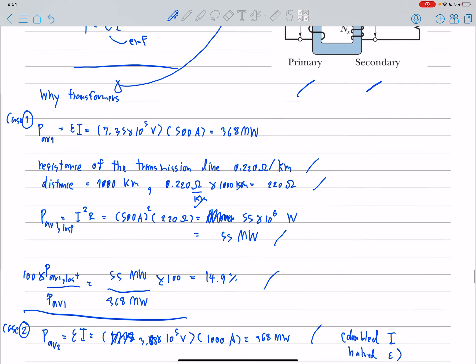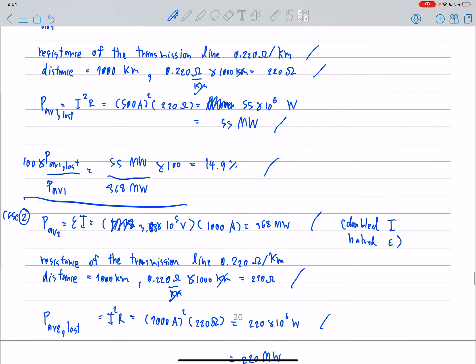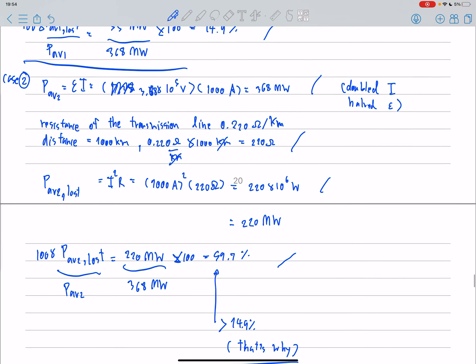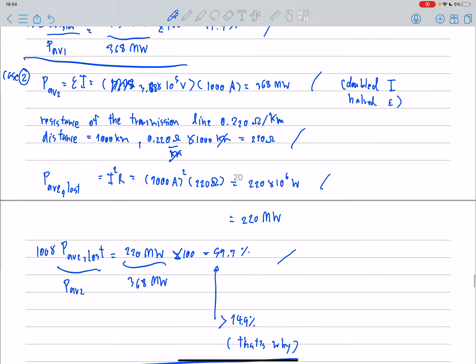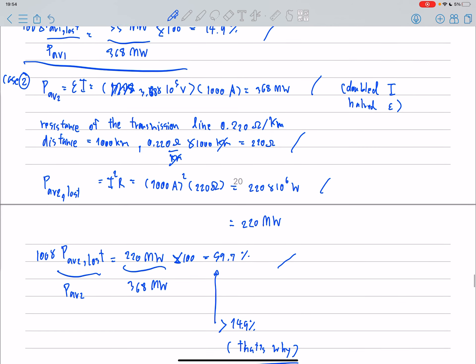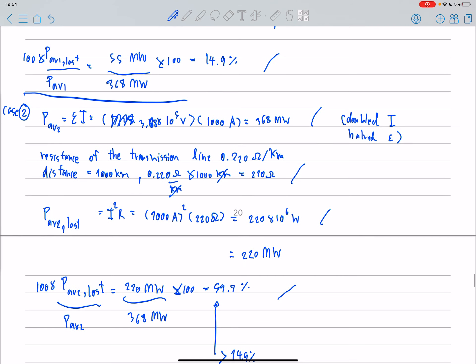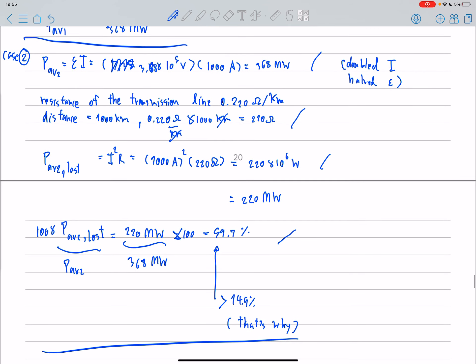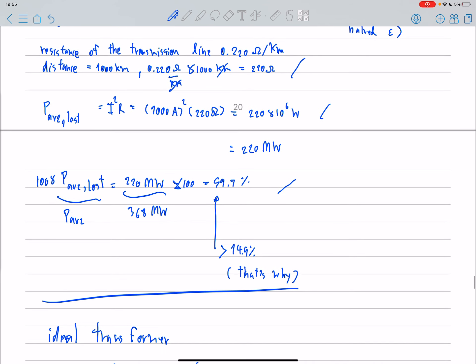So we compare case 1 and case 2. We can see that if we double I and half EMF, the losses will increase from 14 to 59 percent. That's why we need transformers.